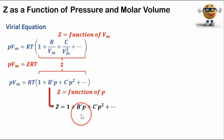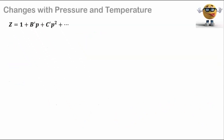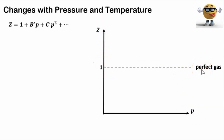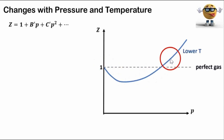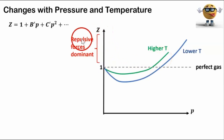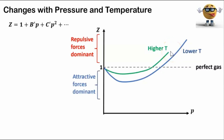We can also look at the virial equation in a form where the compression factor is a function of pressure. Looking at a graph of compression factor versus pressure, if Z equals one, the gas is acting as a perfect gas. For a real gas, the curve generally dips below Z equals one and then rises above it as pressure changes. The temperature also affects the compression factor, so at higher temperatures you may see a different curve. When the compression factor is greater than one, repulsive forces are dominant at those pressures, while under lower pressures attractive forces are dominant.